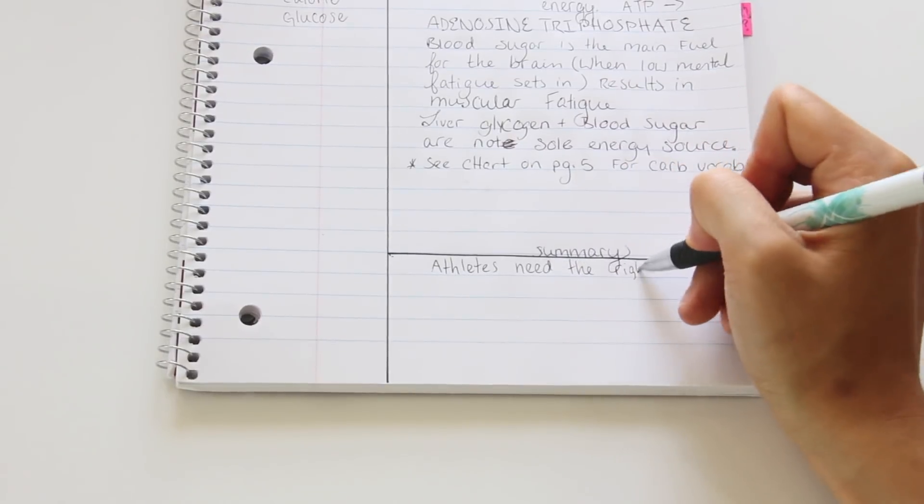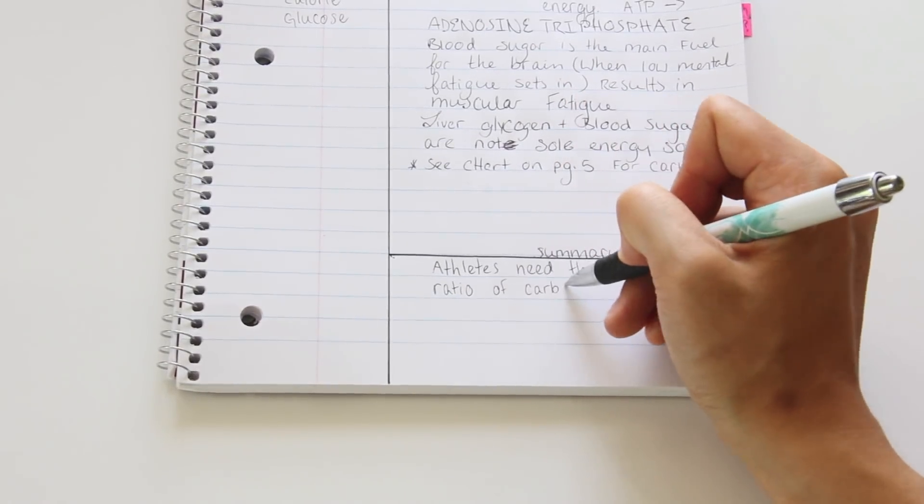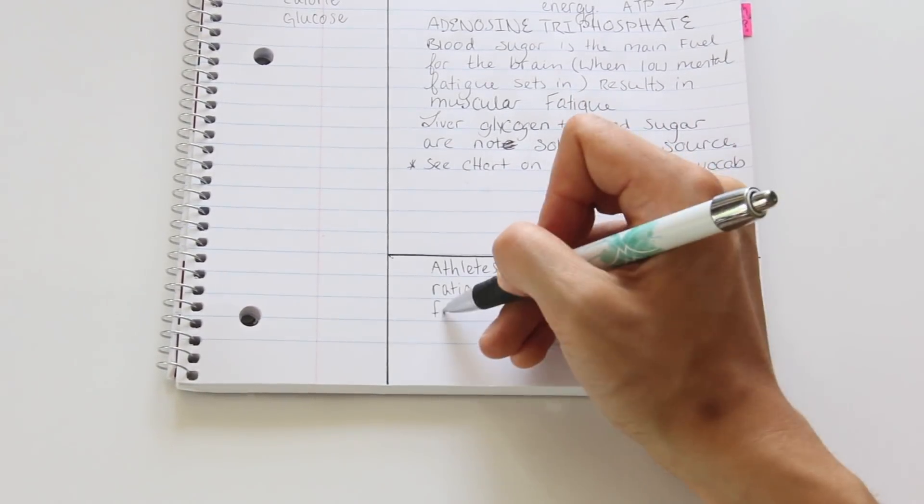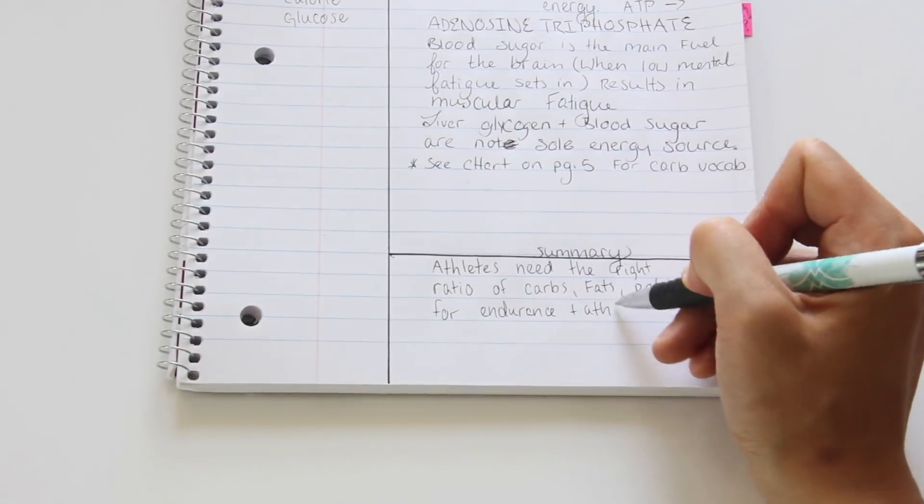This is the summary at the bottom of the page. Once you've gone through your notes, you can summarize the facts and ideas. Try to get your summary to be just one or two sentences.